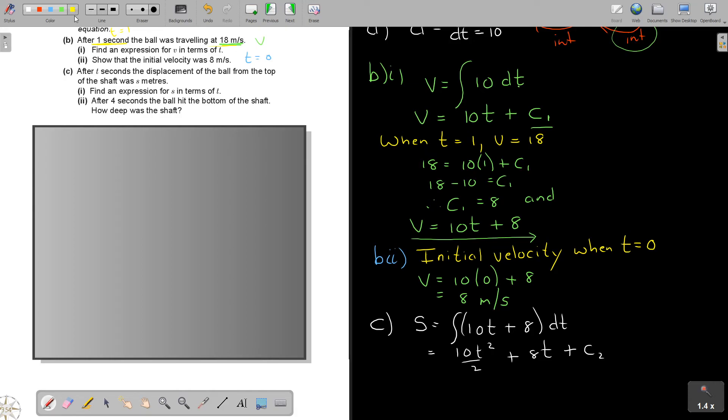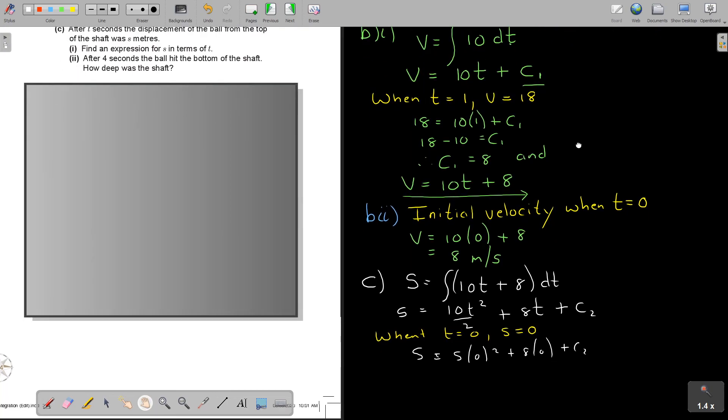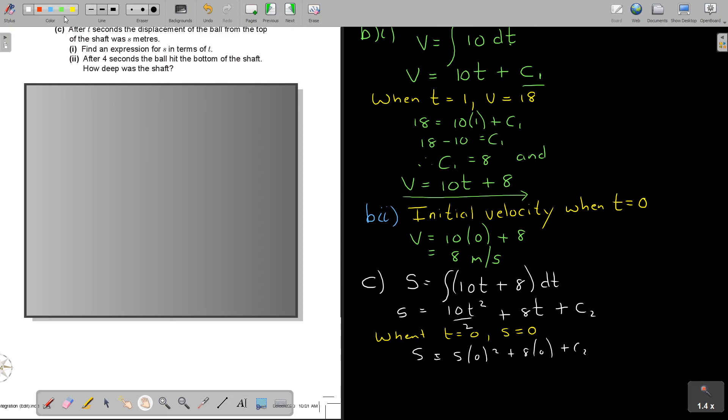Now, we will start with again. When T is 0, when they didn't move any time, what will S always be? S will also be no movements. So, no time, no movement. So, 0. So, therefore, if I am substituting it in there, I can say S, that was 5. And that was 0 square plus 8 0 plus C2. So, I can end up by saying, therefore, C2 is equal to 0 and S is equal to 5 T square plus 8 T. I just substituted in there.